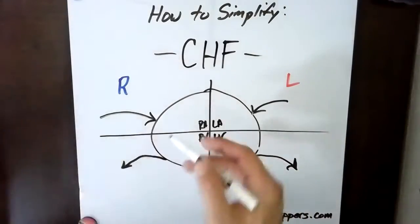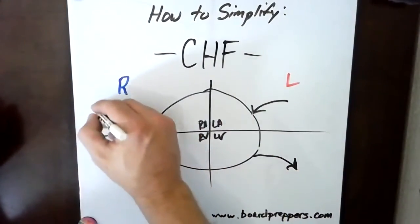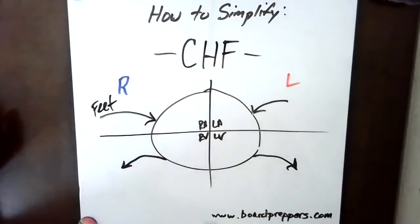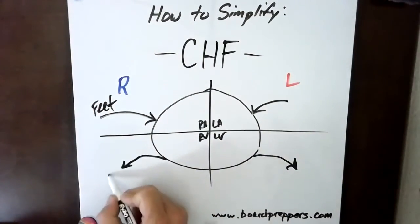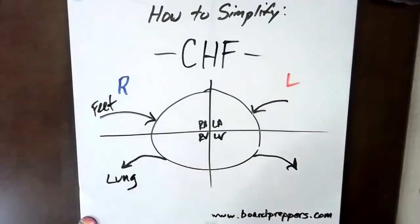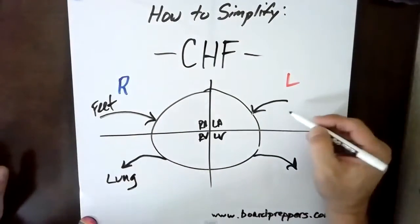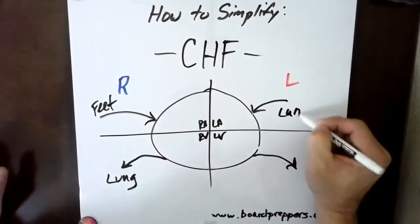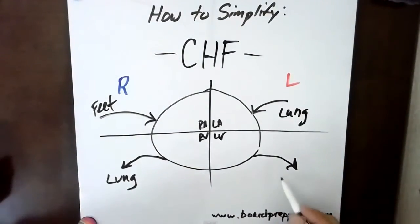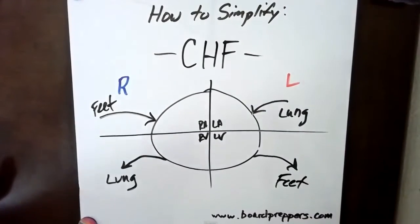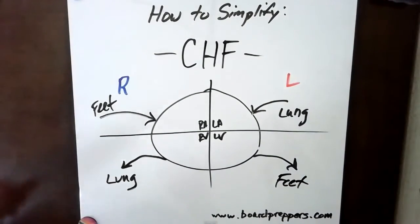In the right atrium, the blood coming in is from the feet. When it comes out of the right ventricle, it's going to the lungs. Blood coming into the left atrium is coming from the lungs, and what's going out of the left ventricle is going back to the feet. So we have a pretty big cycle.